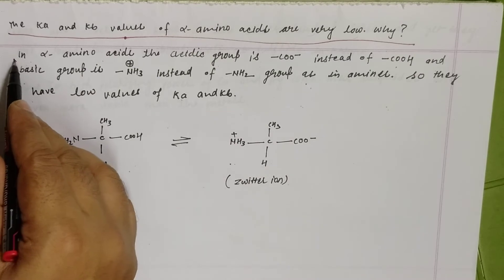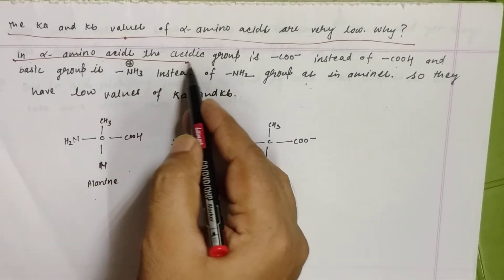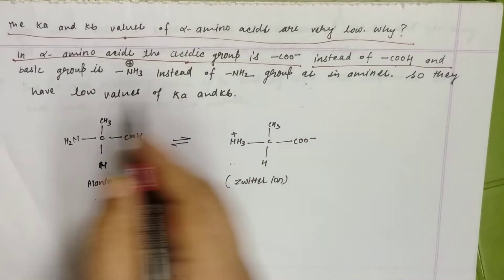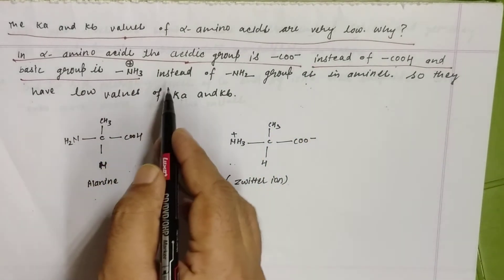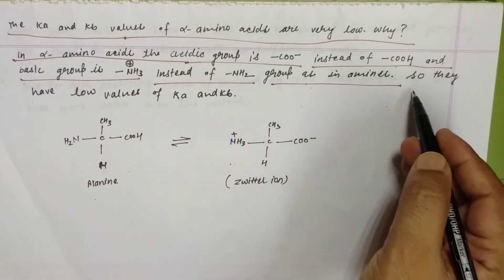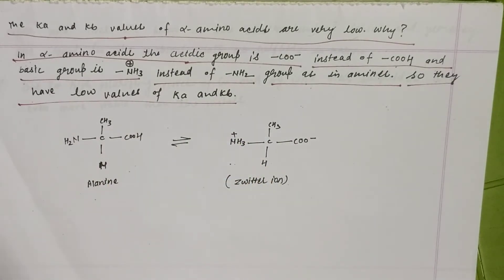Let us read out the answer. The alpha amino acid, the acidic group COO⁻ instead of COOH, and the basic group NH₃⁺ instead of NH₂ group as in amines. So they have low value of Ka and Kb.